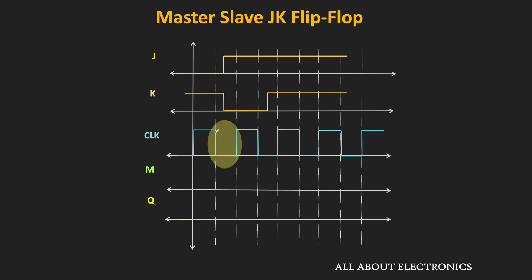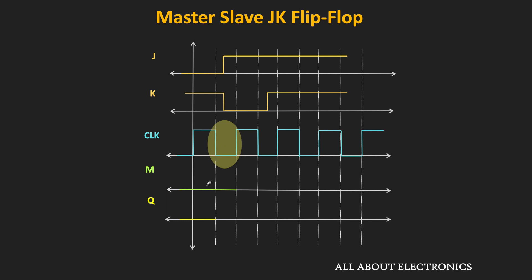Once the clock signal becomes low, the master latch becomes inactive and maintains its present state, so the M output holds at 0 during off-time as well. During the on-time of the clock, since the slave latch is disabled, it maintains its present state and the Q output remains low.